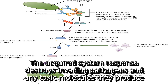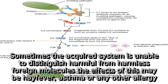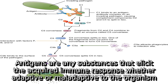The acquired system response destroys invading pathogens and any toxic molecules they produce. Sometimes the acquired system is unable to distinguish harmful from harmless foreign molecules. The effects of this may be hay fever, asthma, or any other allergy. Antigens are any substances that elicit the acquired immune response, whether adaptive or maladaptive to the organism.